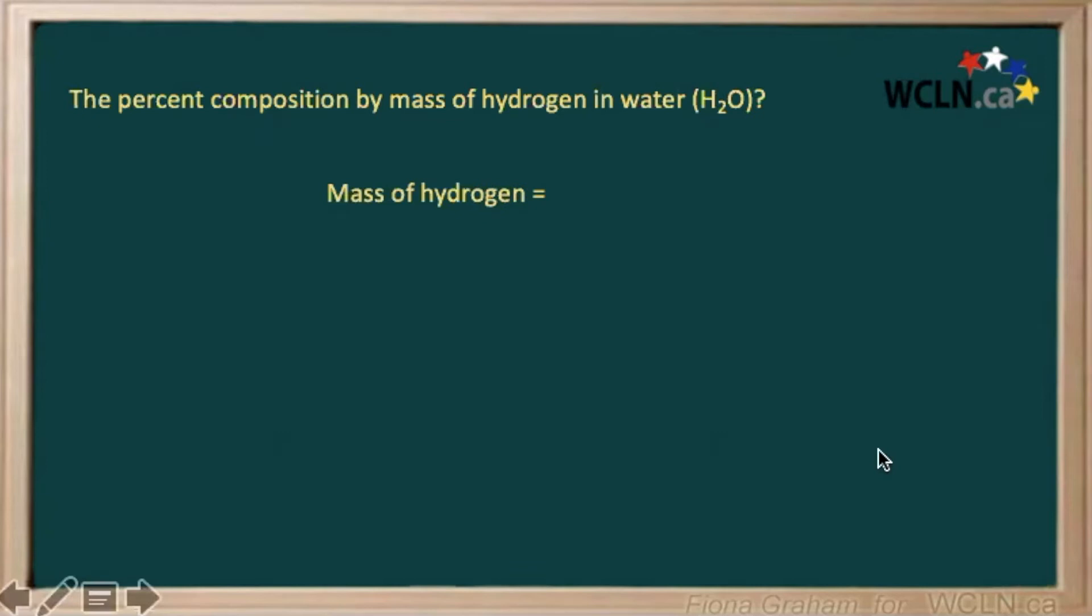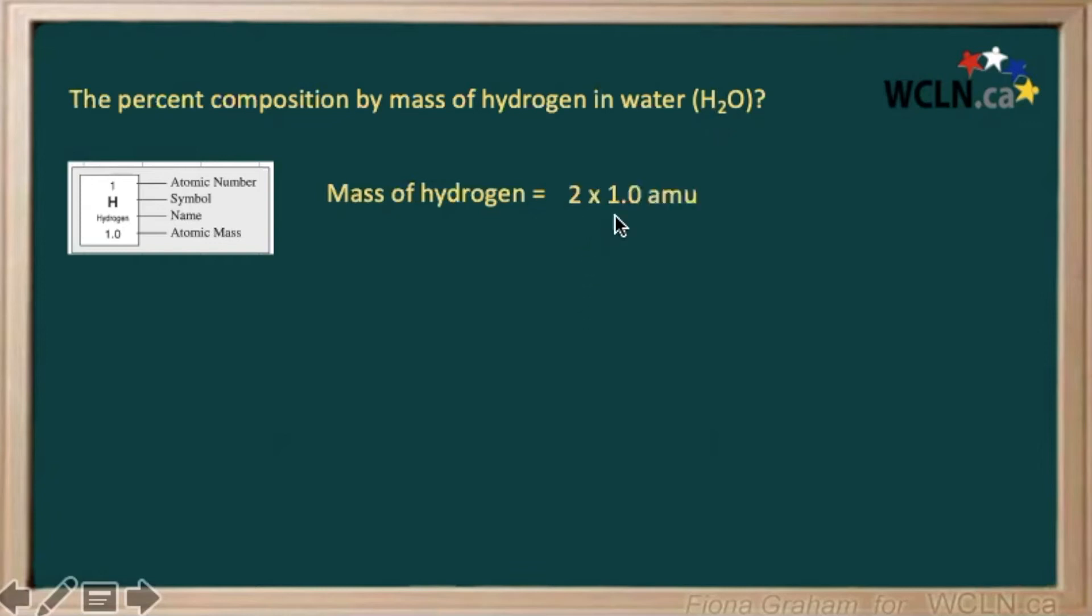Calculating the mass of our hydrogen, we can see here from our periodic table that the mass of hydrogen is 1, and we have 2 atoms of hydrogen in water. So, 2 times 1 would give us a mass of 2 atomic mass units for our hydrogen.